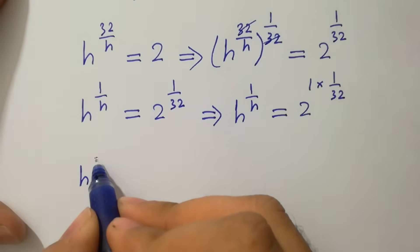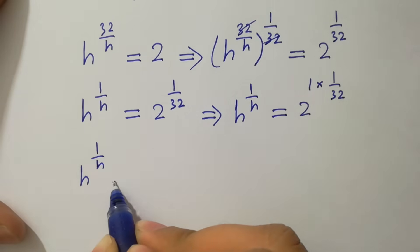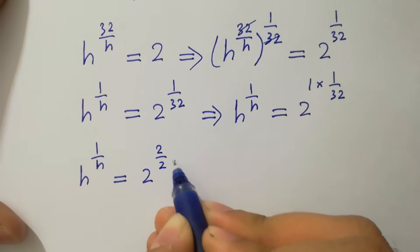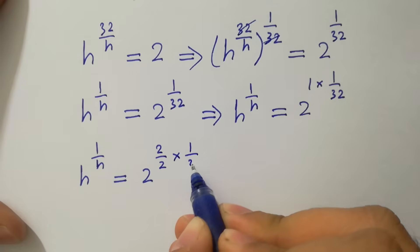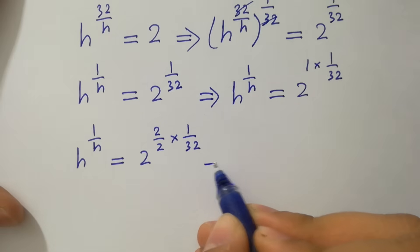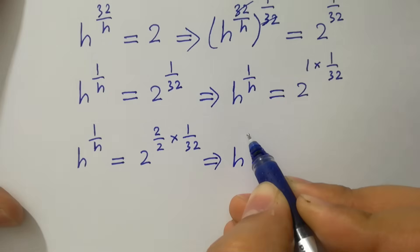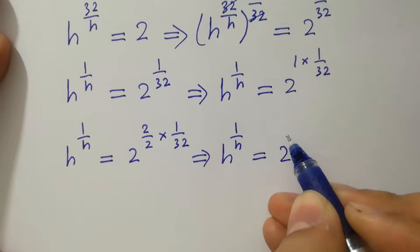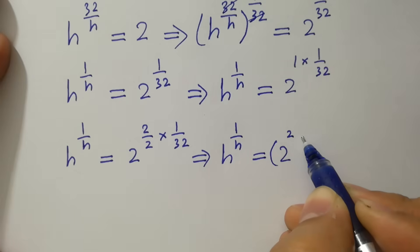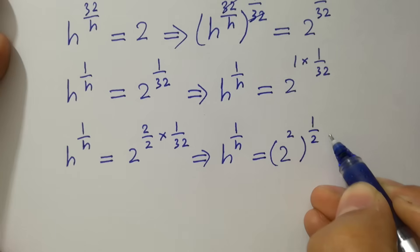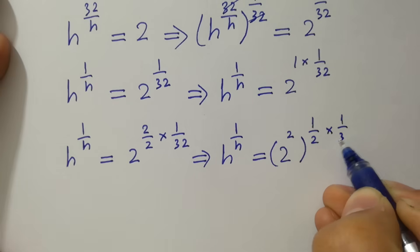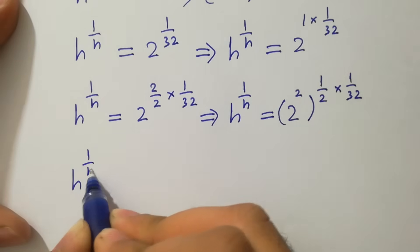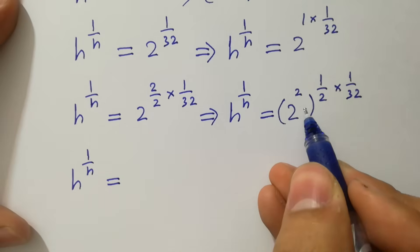h to the power 1 over h equals 2 to the power 2 times 1 over 32. This can be written as 2 to the power 2, so h to the power 1 over h equals 2 over 2 times 1 over 32. After cancellation, h to the power 1 over h equals 2 times 2, which is 4.